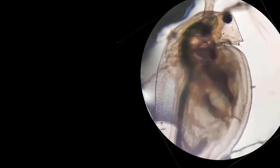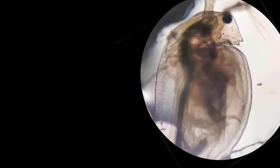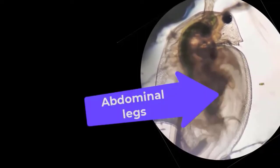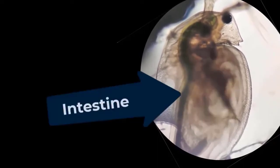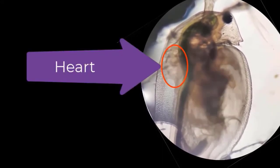The reason we have chosen Daphnia is because it has a transparent body. This is its compound eye. These are its antennae. These are abdominal legs. The intestine and the heart, as you see here, is located at the back of its body.